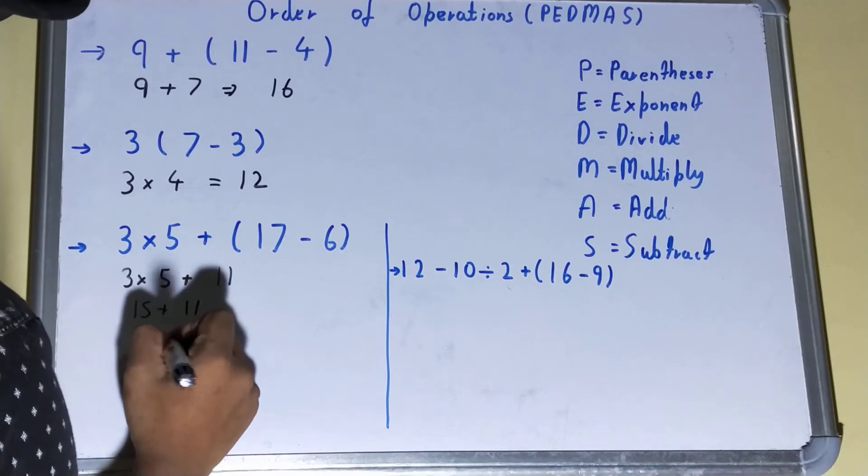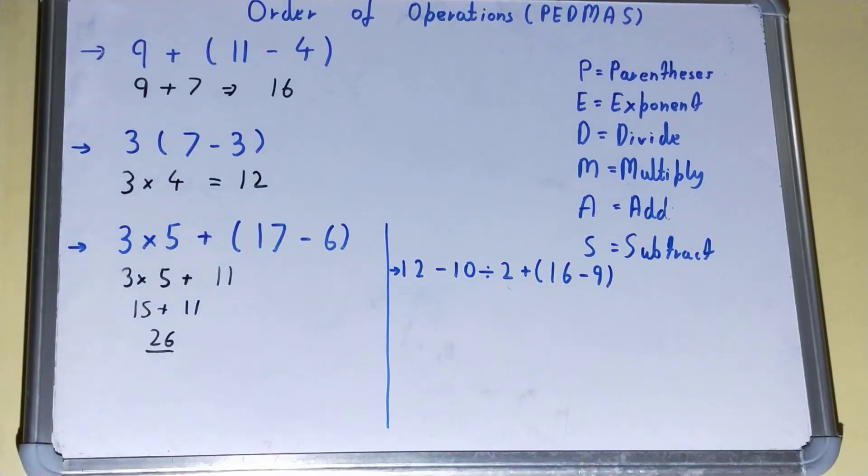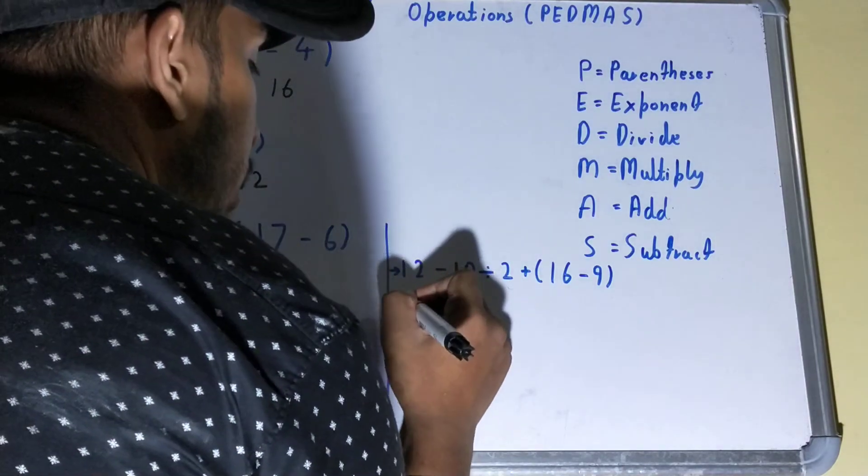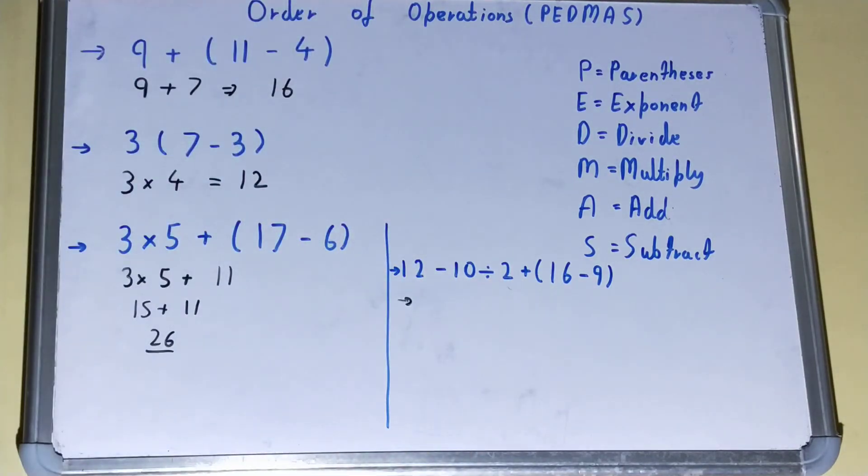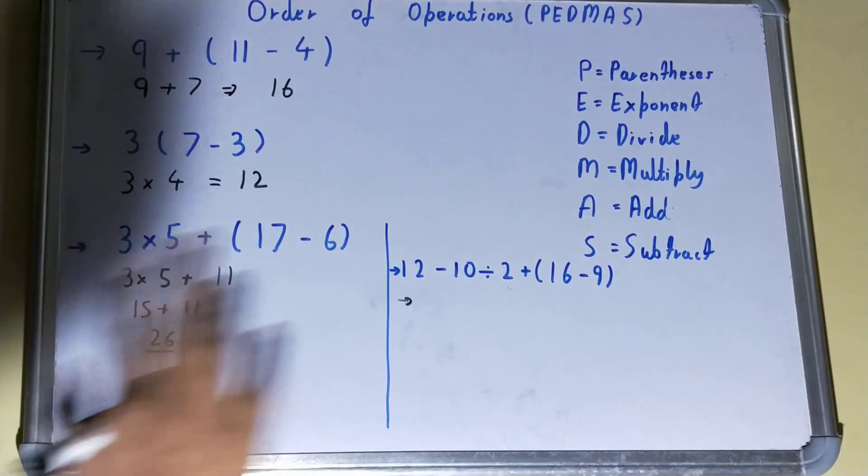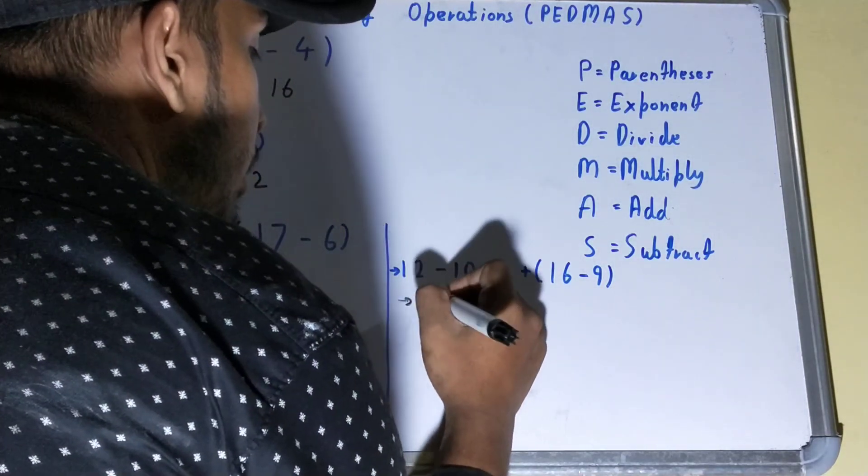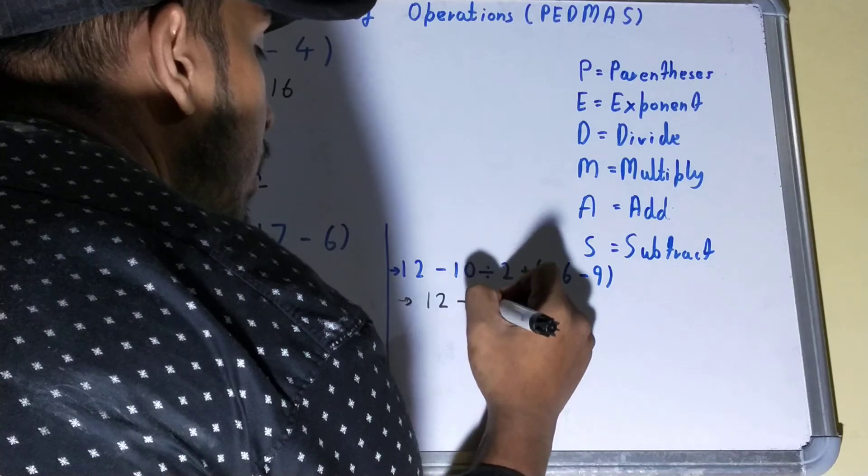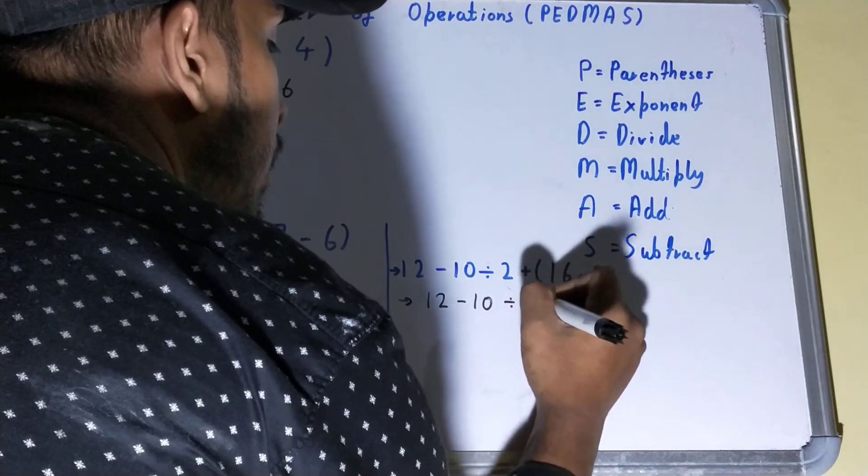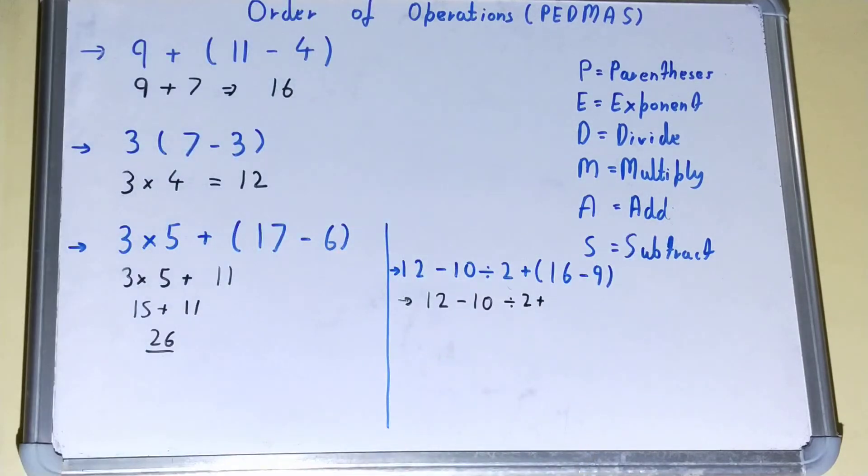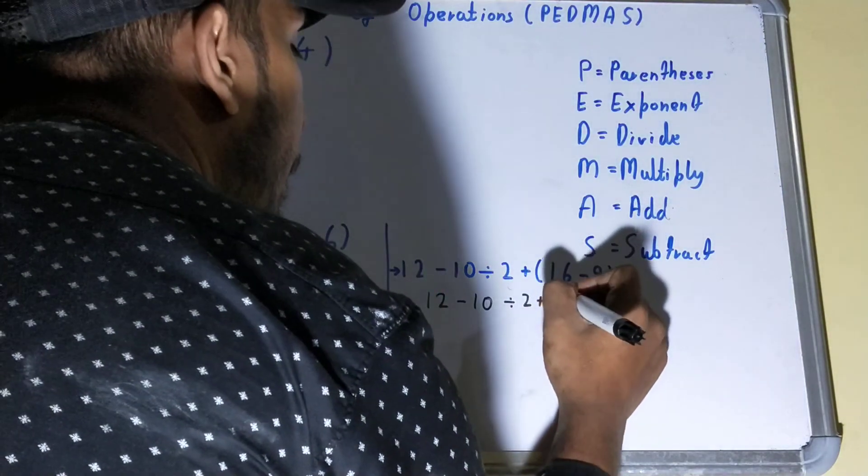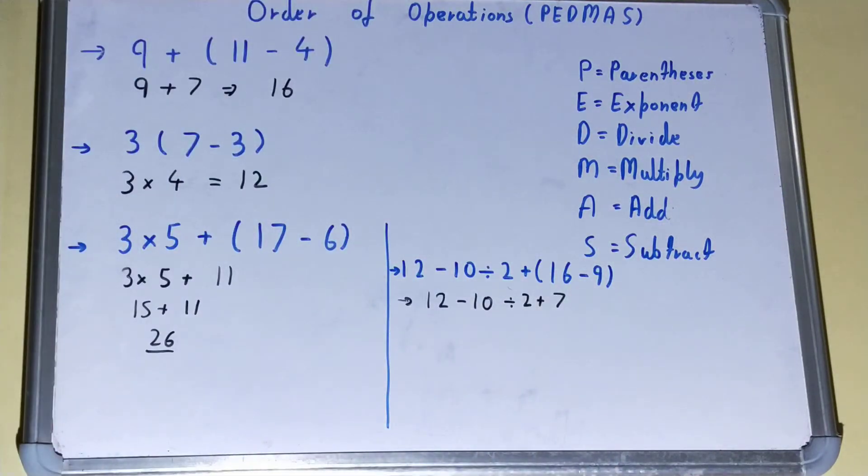That will be 26. So with the help of PEDMAS rule you can solve it easily. You just need to be aware of the rule. Now let's go on to the complex one, that is this one. This is very complex, so you can go for the parenthesis with your eyes closed. You don't need to see any other sign in the first step. That is 16 - 9 will be 7. Now once the parenthesis has been solved...